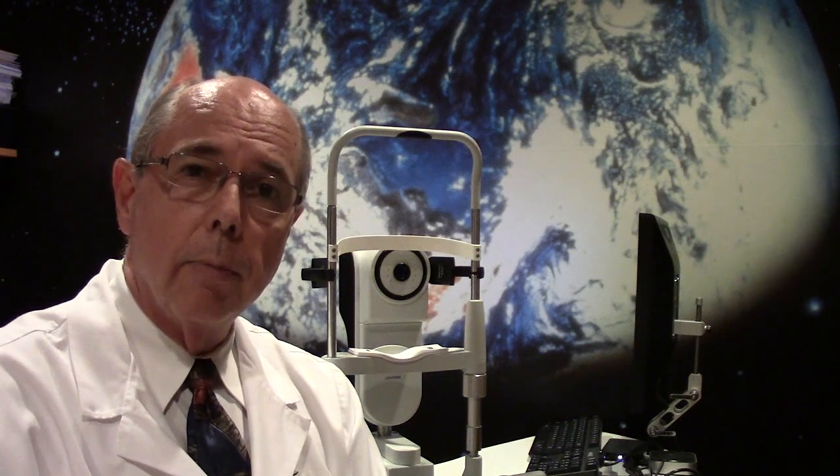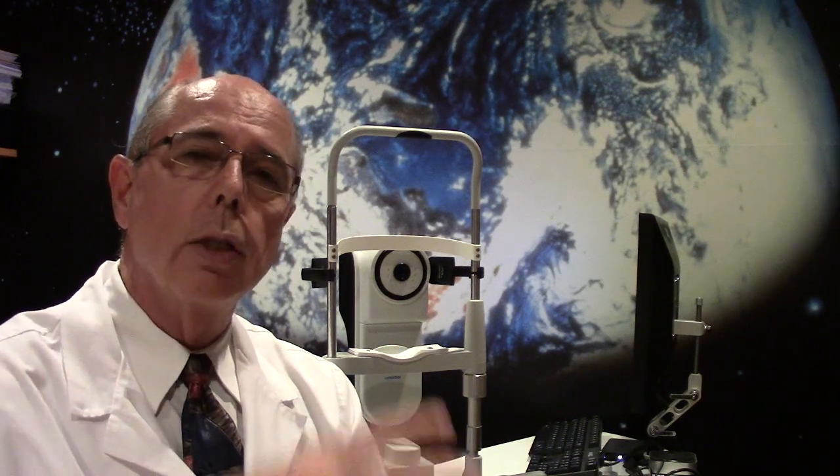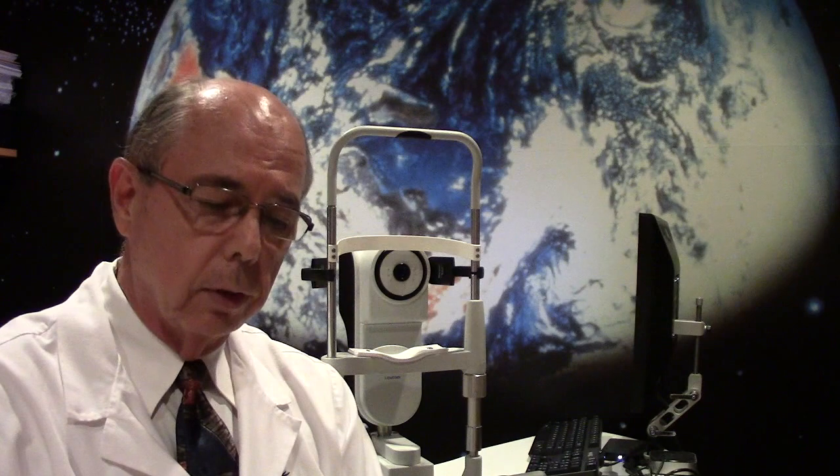In people with meibomian gland disease, they have a very low level of the lipid layer to their tear film which then allows the tears to evaporate off the surface of their eye.